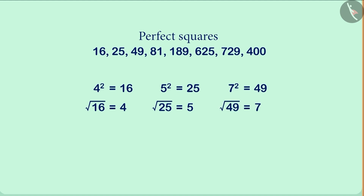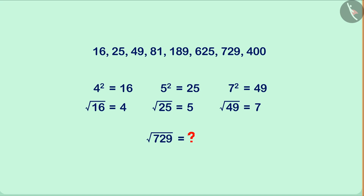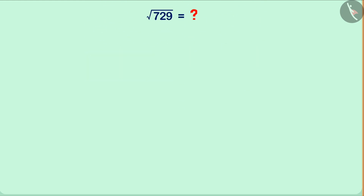Similarly, can you find the square root of the number 729? It is not essential that we must always remember the square root of all perfect squares, because we can find the square root of any number using different methods. So, let us find the square root of 729 using the prime factorization method.